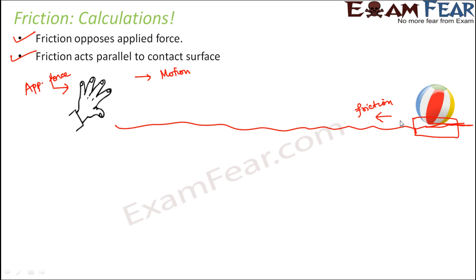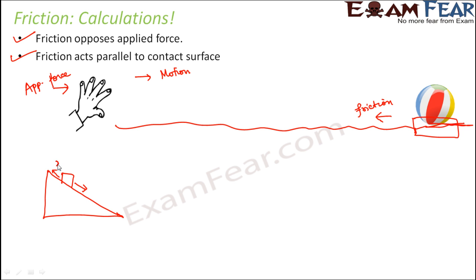Let me give you a few more examples. Suppose instead of a horizontal surface you have a slanting surface — a slope — and an object is sliding down the slope in this direction. The direction of friction will be in the opposite direction of motion. Friction must be opposite to applied force and parallel to the contact surface, so this would be the direction of friction.